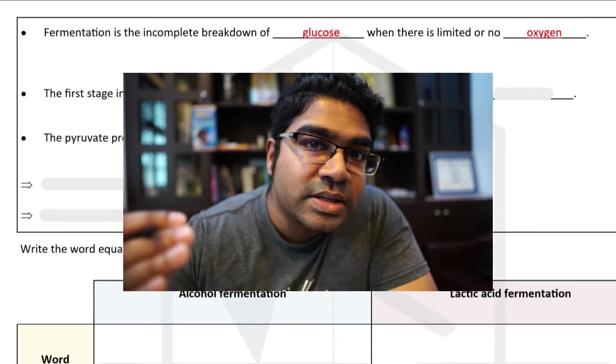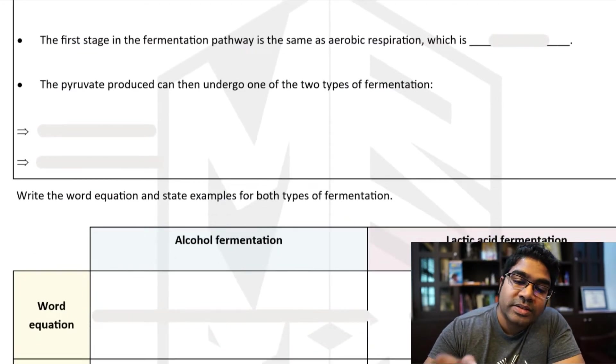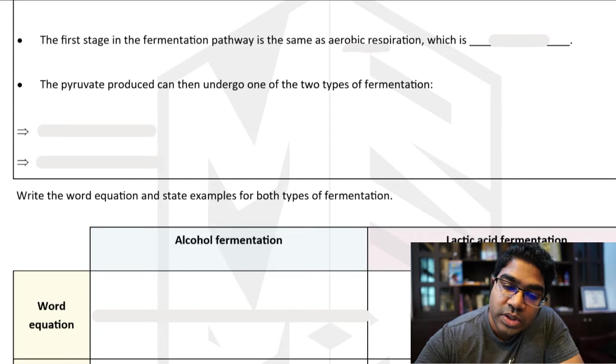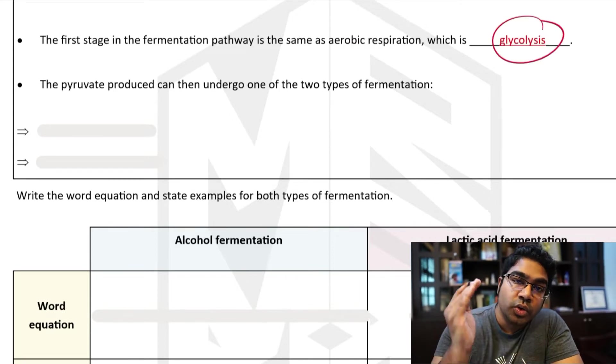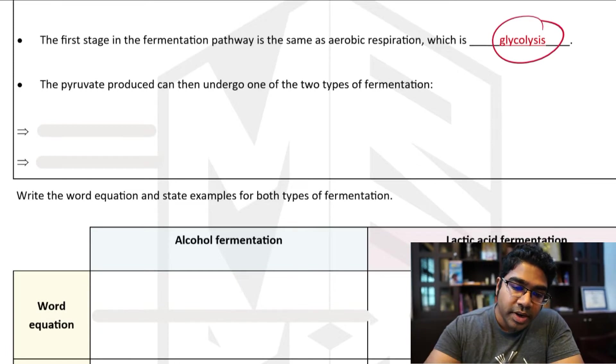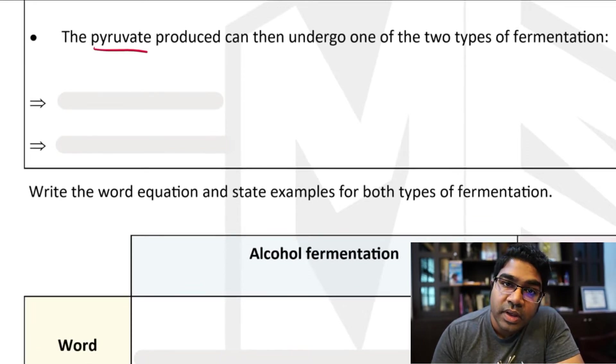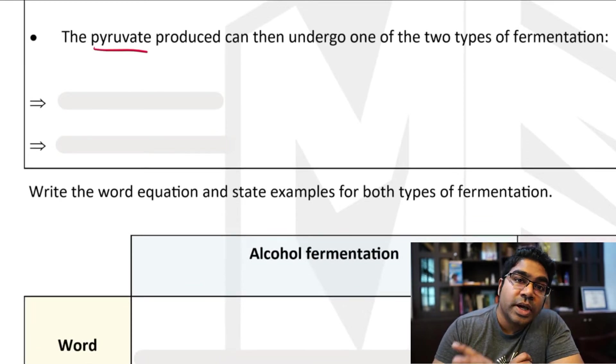However, there are some organisms that only undergo fermentation. The first stage of fermentation is the same pathway as aerobic respiration which is glycolysis. Glycolysis is the breakdown of glucose into pyruvate, and then the pyruvate produced from glycolysis can undergo one of two types of fermentation.